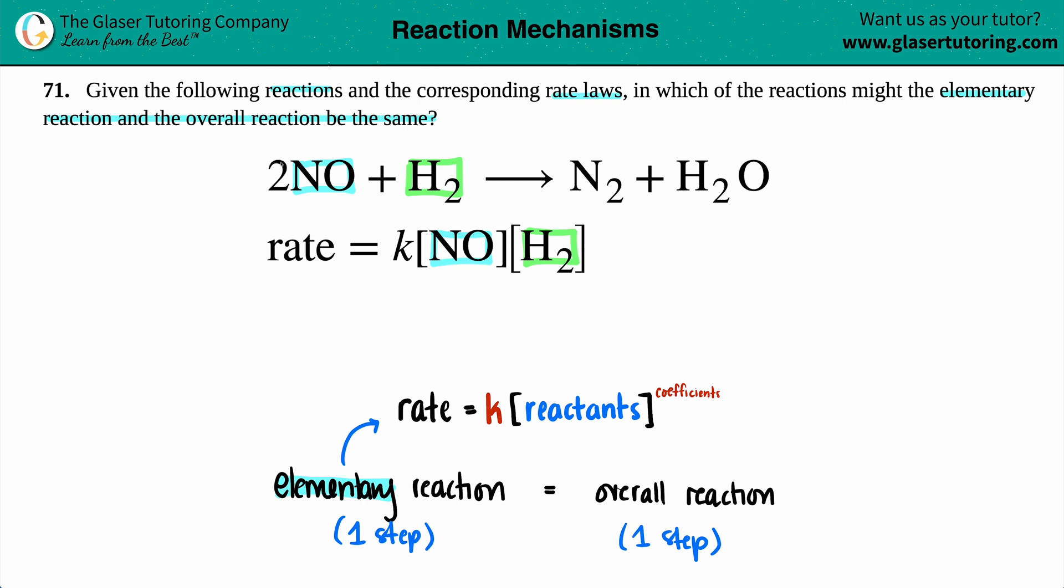Let's see. So in my equation, I have two NOs. But in the rate law, that NO is raised to the first. There wasn't a two here, right? There was only a one here. This does not match. It is not raised to the coefficients.